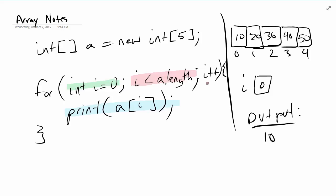i's new value is one. We'll come back and ask: is i less than length, is i less than five? One less than five, true. We'll print a[1], that's 20. We'll increment i again, i's new value is two. Is two less than five? True. We will print a index two, that's 30. We'll increment i again so i is now three.